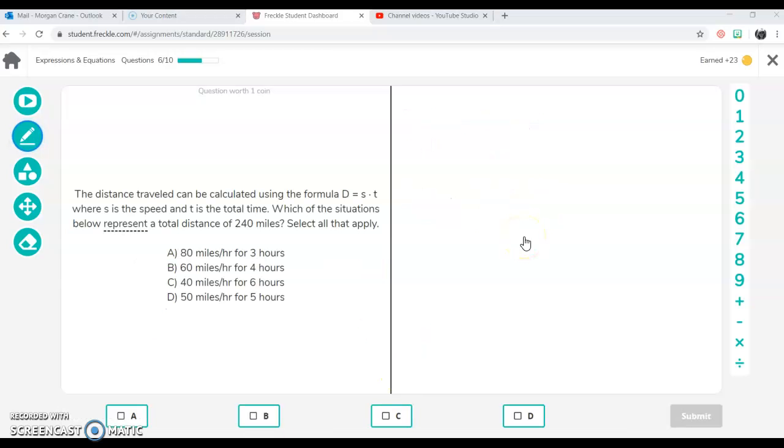All right. And back to this real quick. So distance traveled can be calculated using that formula. This situation wants to know a total distance of 240 miles. So now you have to figure out which problem when you see the word for means multiply. So you have to figure out which problem works here. So I'm going to go ahead and pause the video and be done with it for now. Hopefully this helps. Let me know if you have any more questions.